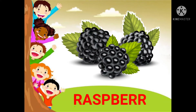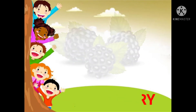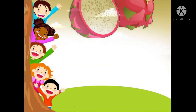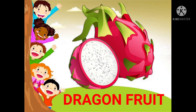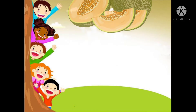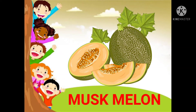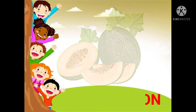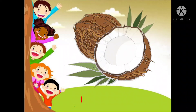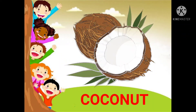Raspberry — this is a raspberry. Dragon fruit — this is a dragon fruit. Muskmelon — this is a muskmelon. Coconut — this is a coconut.